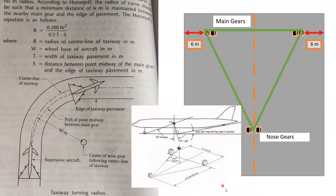We need to understand the wheelbase of an aircraft. The main gears are at the back and the nose gear is at the front. The distance between the main gear and the nose gear is called the wheelbase of the aircraft. This understanding is required when solving problems.